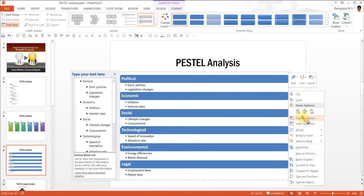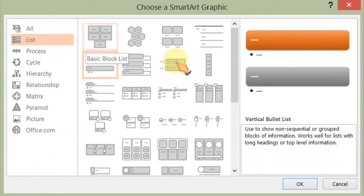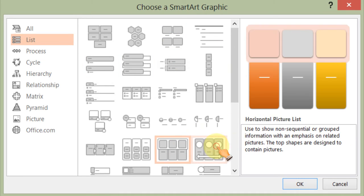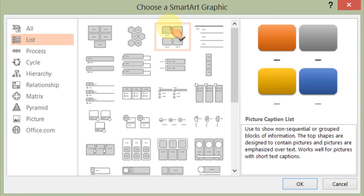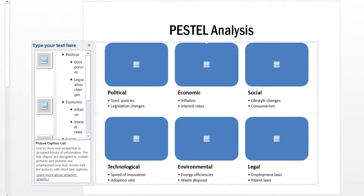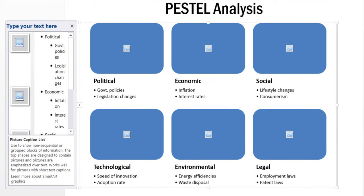Let us try to change the layout. Let us go back once again to the list options and let me show you another type of diagrams. This one called picture caption list, or any of these, lay a lot of emphasis on the images here. If you were to choose this layout, then this is what you get.